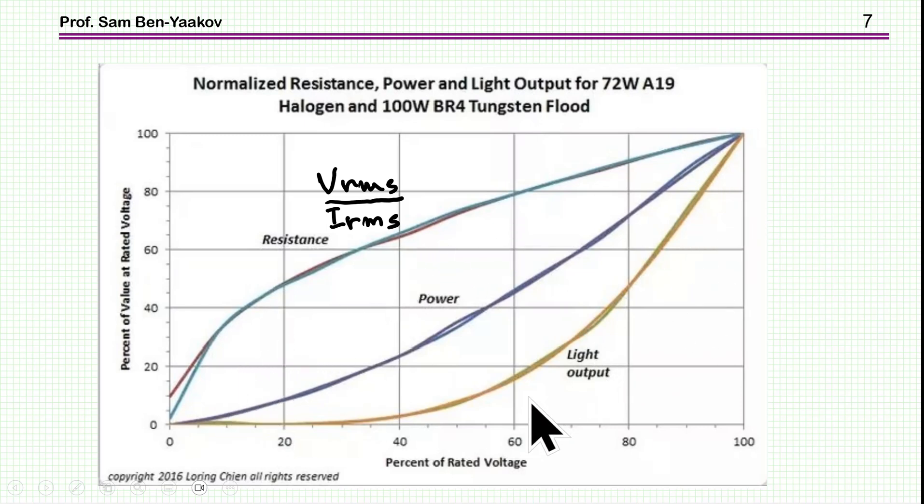Now, this is the power. I'm not concerned with it. But what is very important is the light output. We see that up to, say, 30 volt, this is actually not 30 volt, this is 30 percent of full scale. Up to, say, 30 percent of full scale, there's practically no light output.